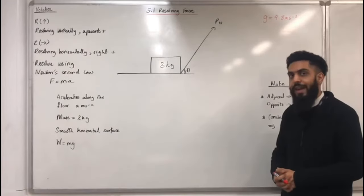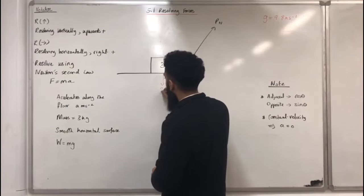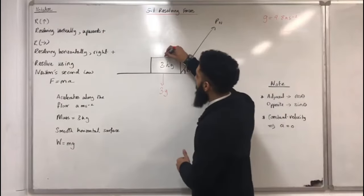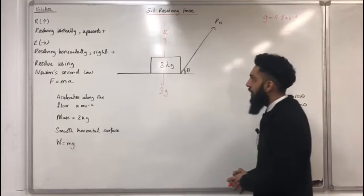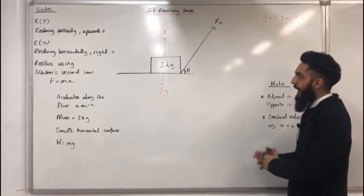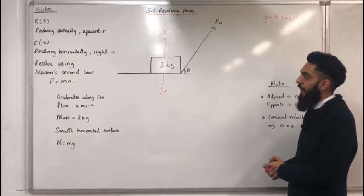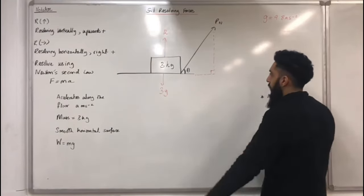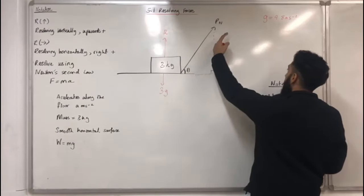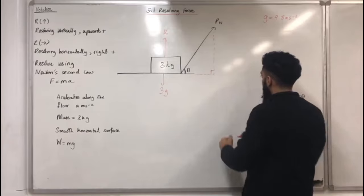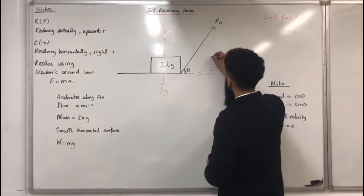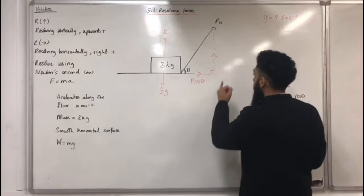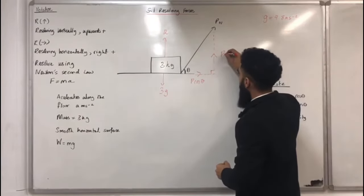I want to label all the forces acting on the box. First, the weight acts vertically downwards and equals 3G, where G is 9.8 metres per second per second. The normal reaction acts vertically upwards, labelled R. The force P Newtons has component forces, which I can determine by forming a right-angle triangle. The horizontal component of P Newtons is P cos theta, and the vertical component is P sin theta.